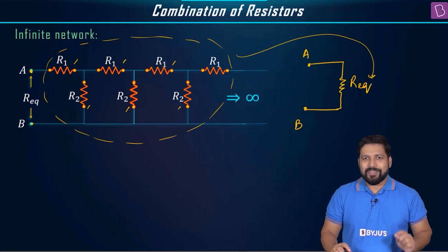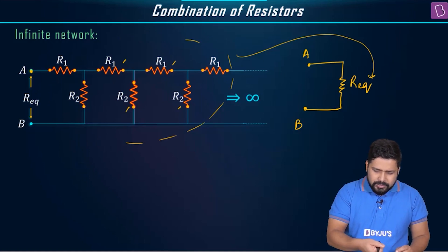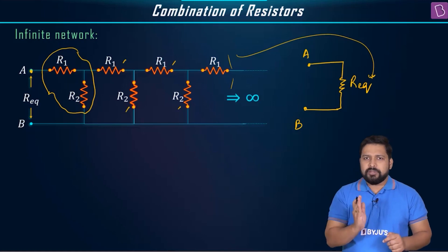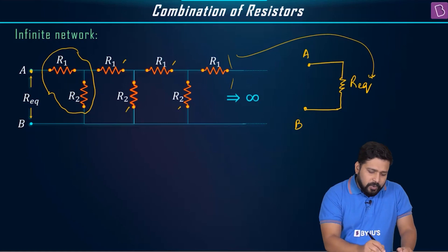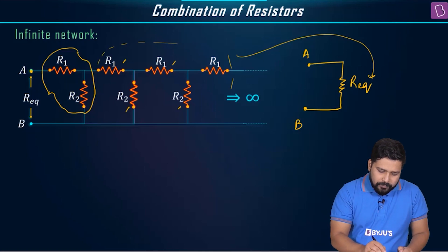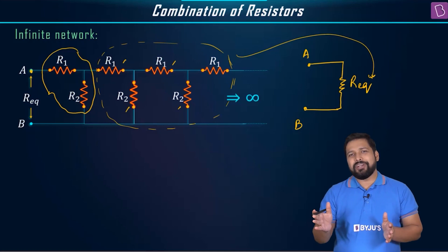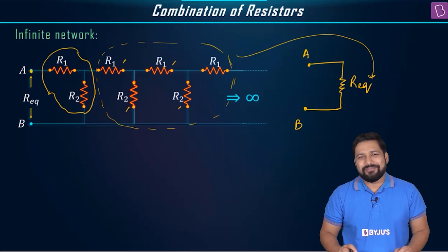The first step — assuming the entire thing can be replaced by one single resistance R equivalent — is clear. The next step is to identify which pattern is getting repeated. Here we see R1 then R2 repeating. Now, keep one pattern and assume the rest is also equal to R equivalent. Because the network extends to infinity, adding or removing a few resistances doesn't make any difference.